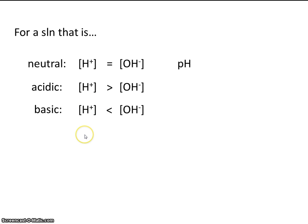And lastly, what can we say about the pH? Well, the pH of a neutral solution is 7. The pH of an acidic solution is less than 7, and of course, the pH of a basic solution is greater than 7.